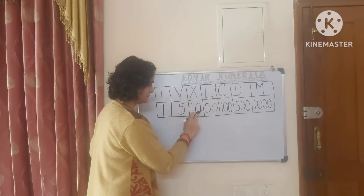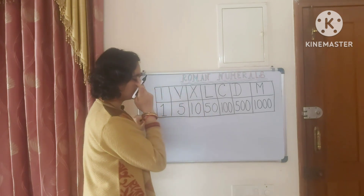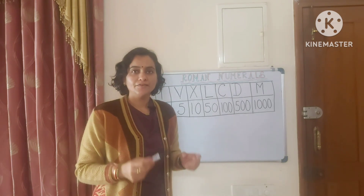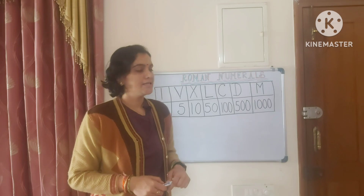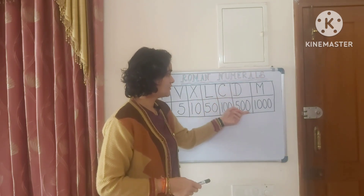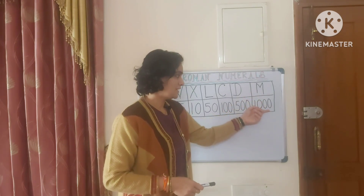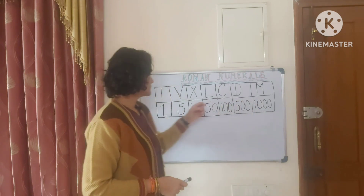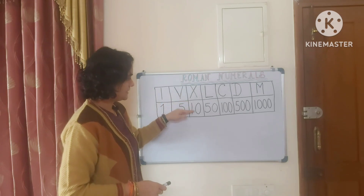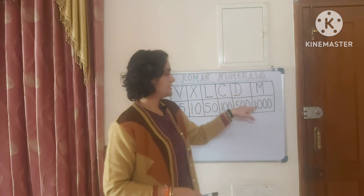Next is L — L's value is the same as 50. Next is C — C stands for century. When someone scores 100 runs, we call it a century; century means 100. Then comes D — D is 500. Then M — M's value is 1000. So again: I is 1, V is 5, X is 10, L is 50, C is 100, D is 500, M is 1000.